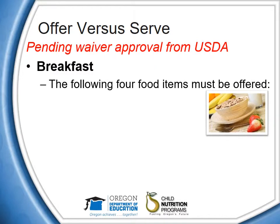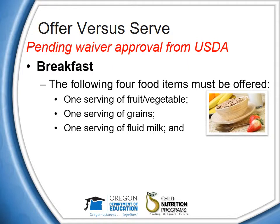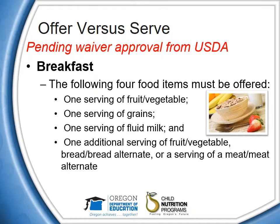For breakfast under OVS, the following four food items must be offered: one serving of fruit or vegetable, one serving of grains, one serving of fluid milk, and one additional serving of fruit or vegetable, bread or bread alternate, or a serving of meat or meat alternate. Offering two servings of the same food item is not permissible under OVS in SFSP — all food items offered must be different from each other. For example, a breakfast menu that includes a serving of milk, a serving of fruit, and two servings of toast is not a reimbursable meal under OVS because the toast is two of the same food item.